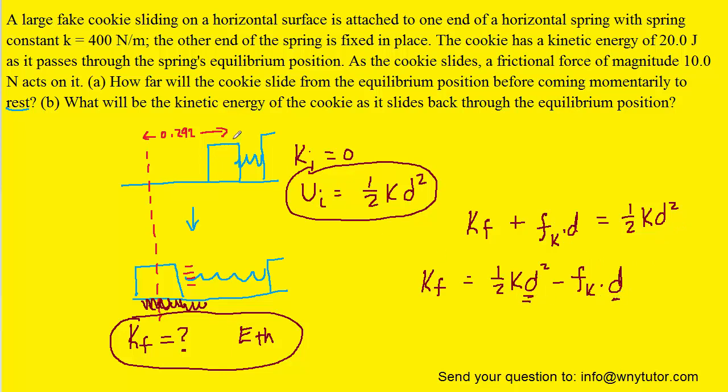Now remember, for d, we're going to be using the distance that we had found in part a, because the cookie is going to slide to the left a distance of 0.292 meters back to its equilibrium position. So we'll plug in d, k, and the frictional force. And when we simplify that, we get approximately 14.2 joules for the final kinetic energy once the cookie has returned back to the equilibrium position.